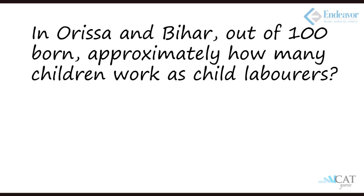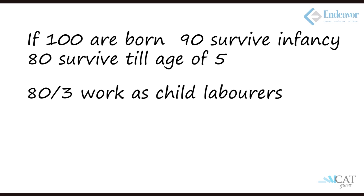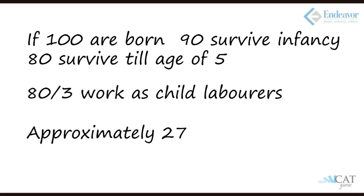Question 3: In Orissa and Bihar, out of 100 born, how many work as child labourers? 100 are born, 90 survive infancy, 80 survive till age 5. Child labourers are one third of the remaining, so 80/3 ≈ 26.66, approximately 27. That is the right option.